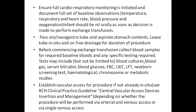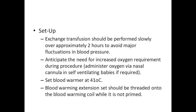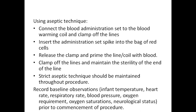The procedure may be performed via arterial or venous access or via single venous access. The exchange transfusion should be performed slowly over approximately 2 hours to avoid major fluctuations in blood pressure. Anticipate the need for increased oxygen requirement during the procedure. Set the blood warmer to 41 degrees Celsius. The blood warming extension set should be threaded on the blood warming coil while it is not primed. Use an aseptic technique. Connect the blood administration set to the blood warming coil, clamp the lines, spike the bag of red blood cells, release the clamp, and prime the coil.